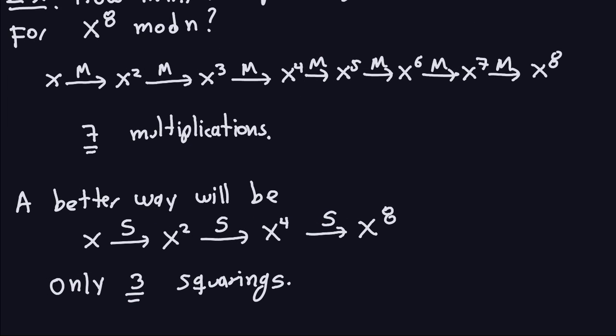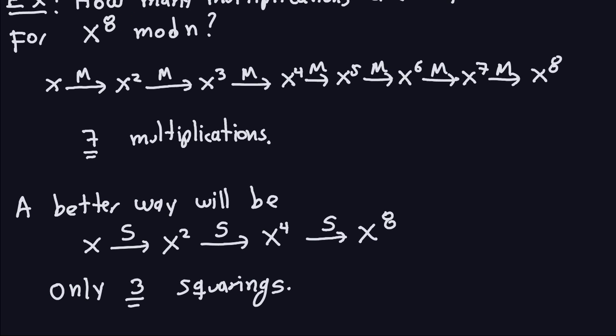The reason squaring alone works so nicely here is that the exponent 8 is a power of two — when the exponent is a power of two you can reach it in just a few squarings. But that's not always the case. When the exponent is not a power of two, you have to use a combination of squaring and multiplication. In the next video I'll explain exactly how the algorithm works and walk through examples to give you a concrete idea of how it works in reality. See you in the next video.